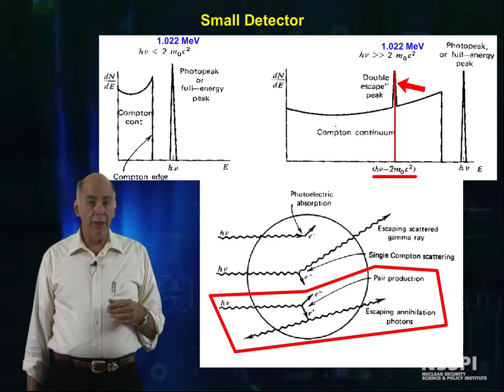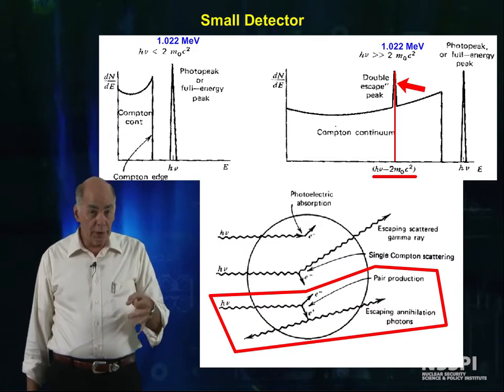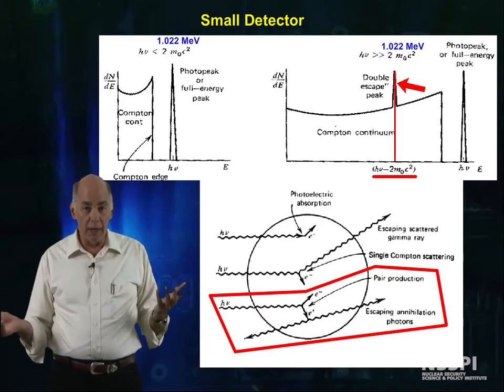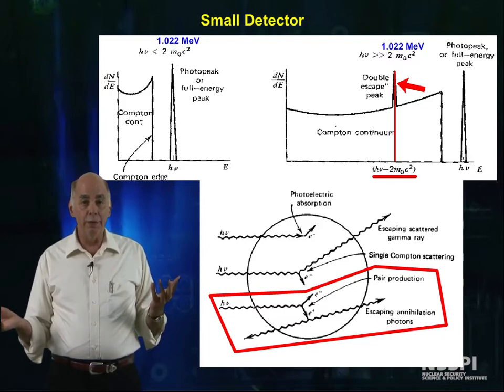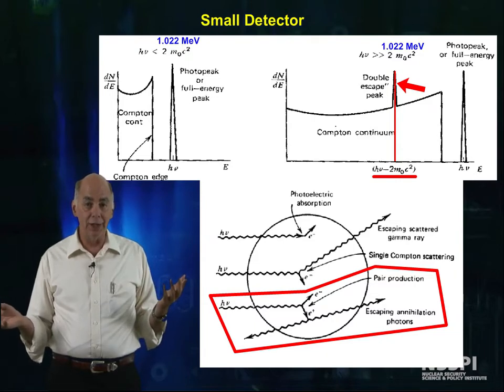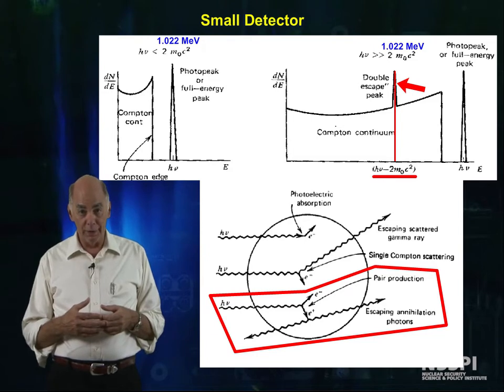For pair production, again, since we are assuming a small detector, we assume that the 511 gammas escape, and so that we end up with a double escape peak for those photons interacting in the detector that have more than 1.022 MeV. This double escape peak is set down from the gamma energy by 1.022 MeV.